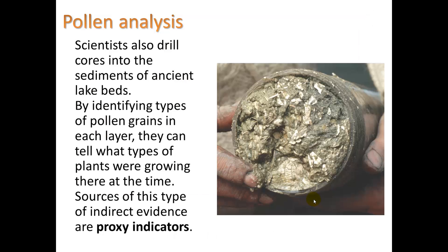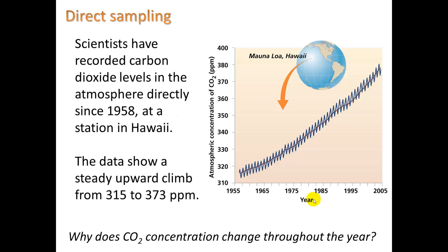We can also do analysis on pollen. You don't have to know the details there. But they can give us an idea of what kind of vegetation was growing there. And that gives us some indirect evidence for the amount of CO2 in the atmosphere. These are called proxy indicators. They give us approximate values. And, of course, direct sampling like we already talked about. And that's only been done since 1958.